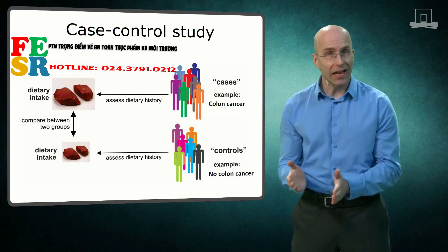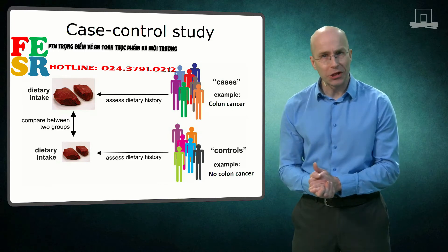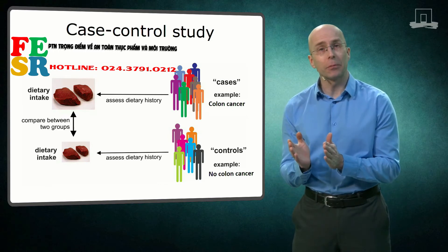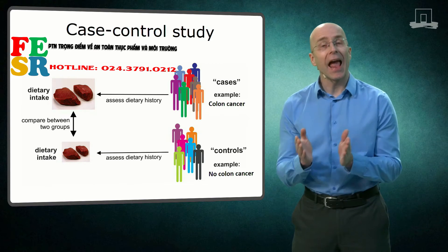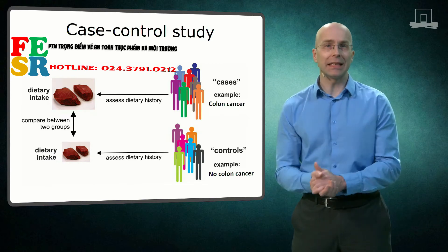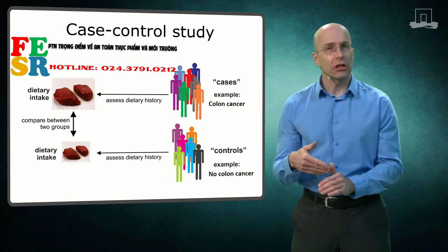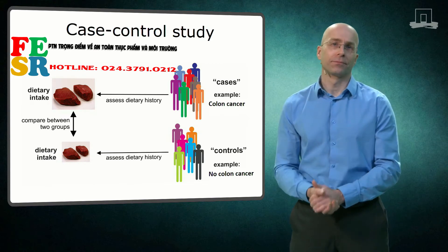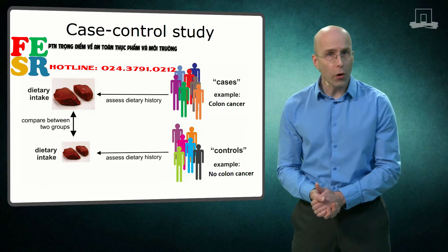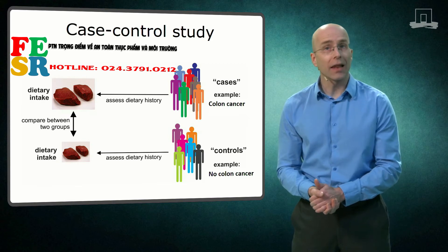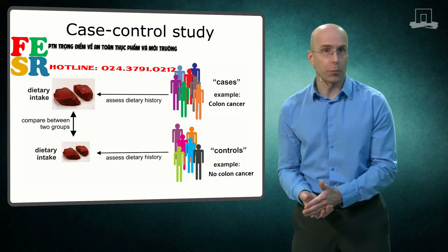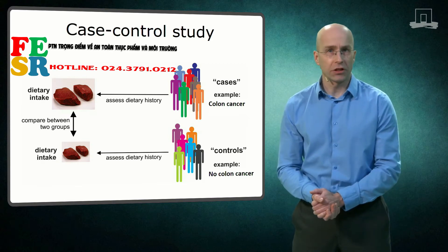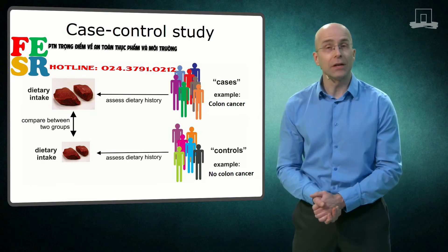A major advantage of case-control studies is that they allow you to study the link between diet and rare diseases, such as certain forms of cancer. Cohort studies are less suitable for that purpose unless they include hundreds of thousands of individuals.